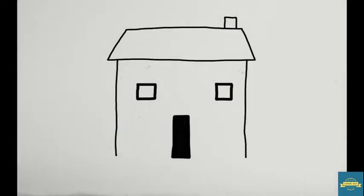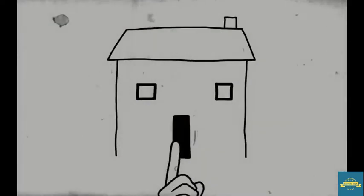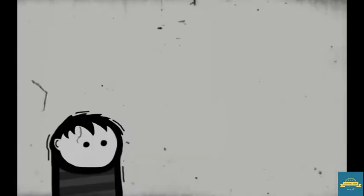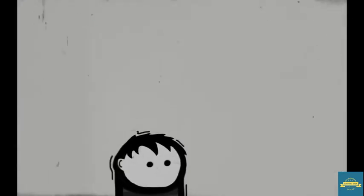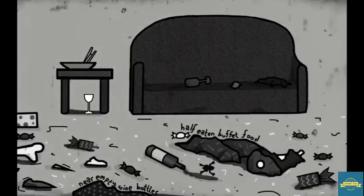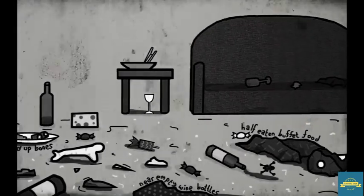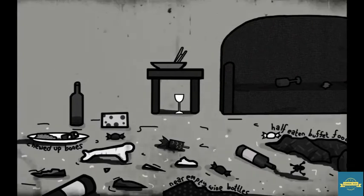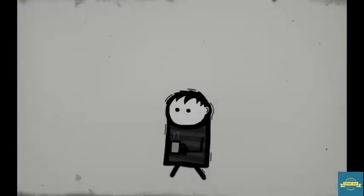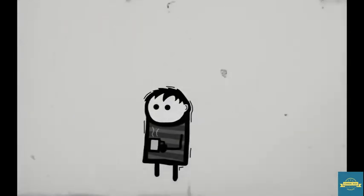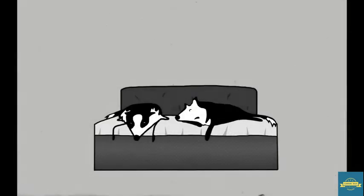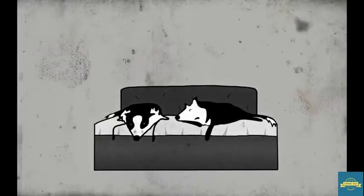Next day when I woke up, the house was quiet. I dressed up and went down for warm milk. The living room was a mess. I saw half-eaten buffet food, nearly empty wine bottles and even chewed-up bones. So I warmed up my milk and went to my mom's room, but she wasn't there. Instead, Chelsea and Limbo were on the bed. Looks like they made out last night.